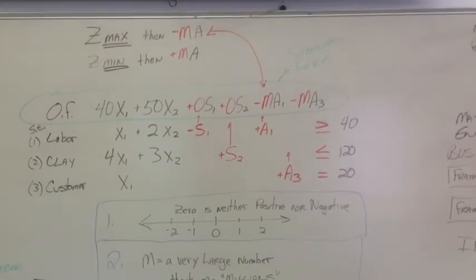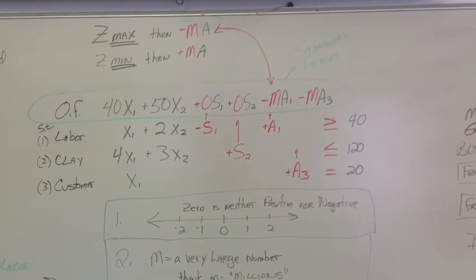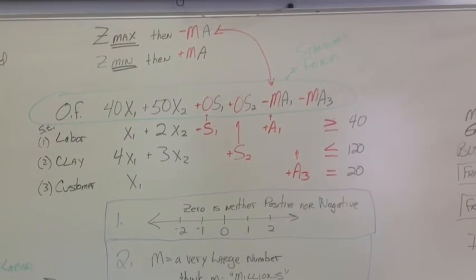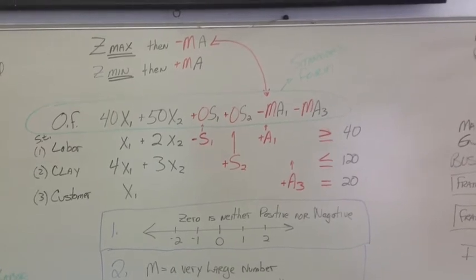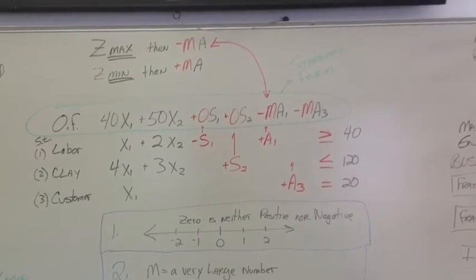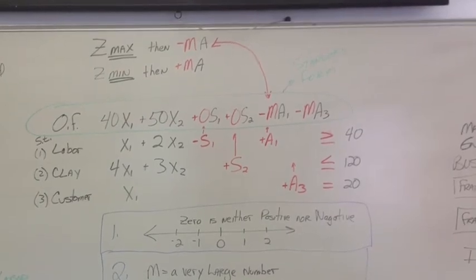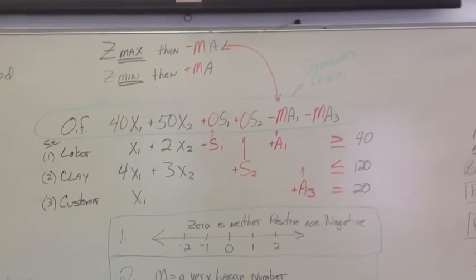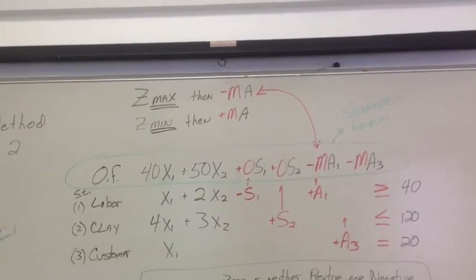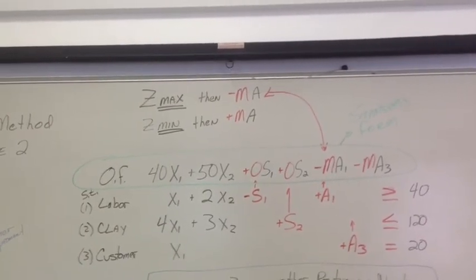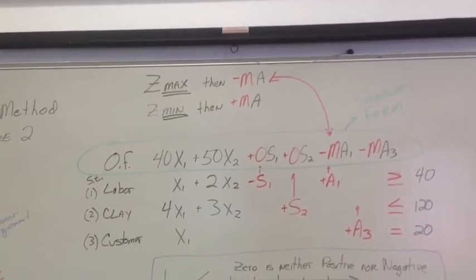All right, the second thing is the use of MA, the negative MA. We use minus because it's a maximization problem. If it was a minimization problem, we'd use plus MA, so you have to pay attention to if it's a max or a min problem.